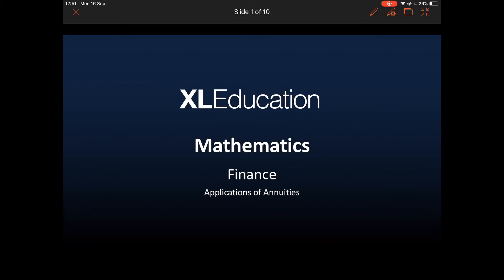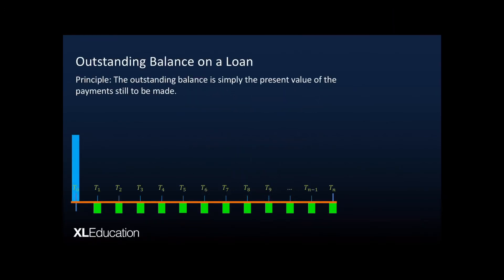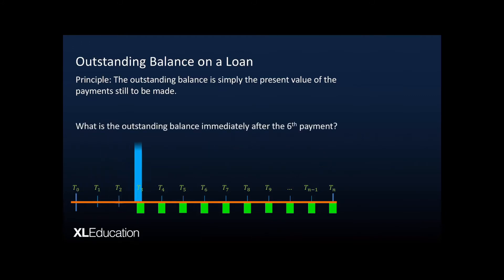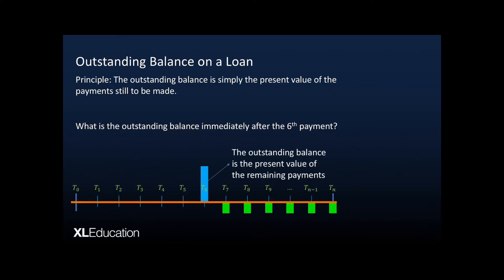Welcome to this video on the applications of annuities. Let's start with the outstanding balance on a loan. The principle here is that the outstanding balance is simply the present value of the payments that are still to be made. The amount borrowed from the bank initially is the present value of all loan payments — that is, the outstanding balance at t0. So the outstanding balance after a certain number of payments is simply the present value of the payments still to be made.